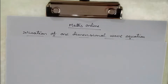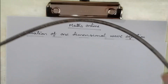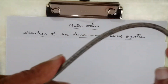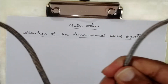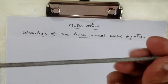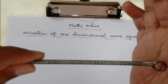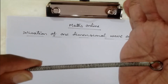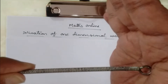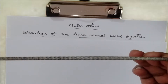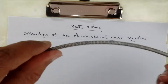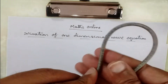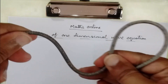To derive the one-dimensional wave equation, we consider a flexible string. You take a string and tie one end to a wall; the other end is tied to the other wall. If the string is fixed at one end and you give a jerk from the other end, waves will be created of this form.